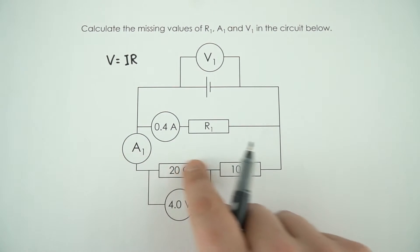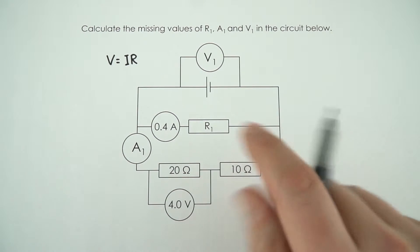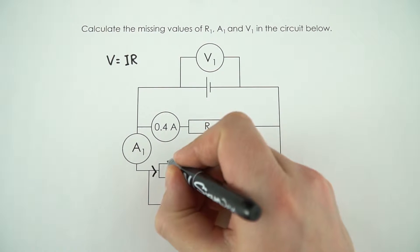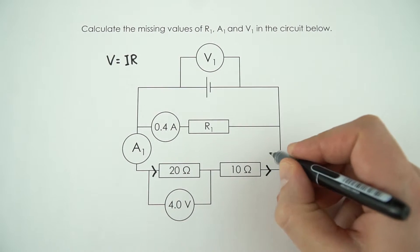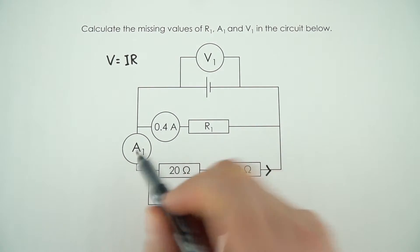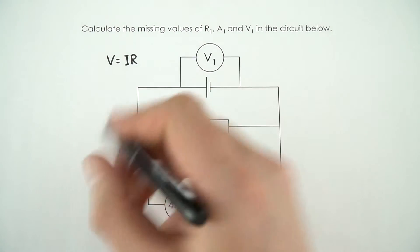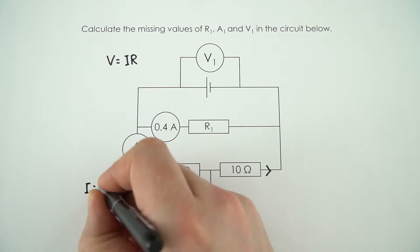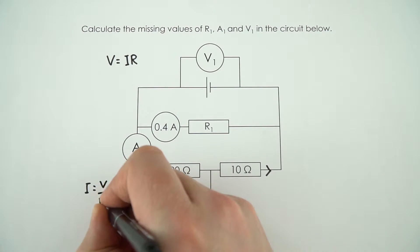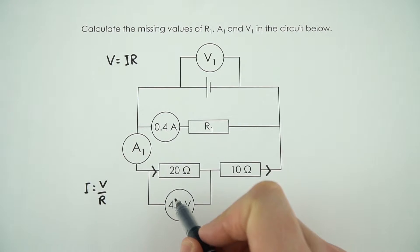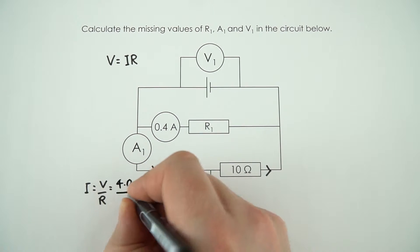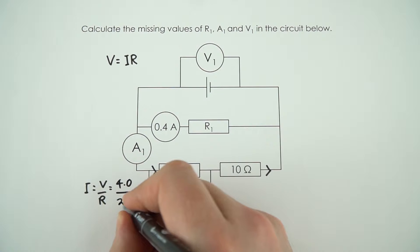And because on this loop of the circuit you can have the same current everywhere, if we work out the current through this, that also tells us the current through this resistor and the current through that ammeter. So I'm going to rearrange this to say that I is equal to V divided by R. We know here that the value of V is equal to 4.0 and the value of R is equal to 20.